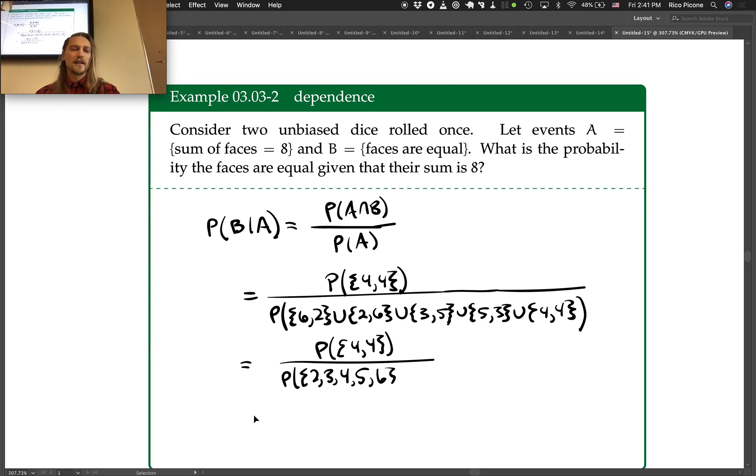That's not quite right, that interpretation. Really what we have is the probability of (6,2) plus the probability of (2,6), etc. So you have the probability of each event. So you end up with...